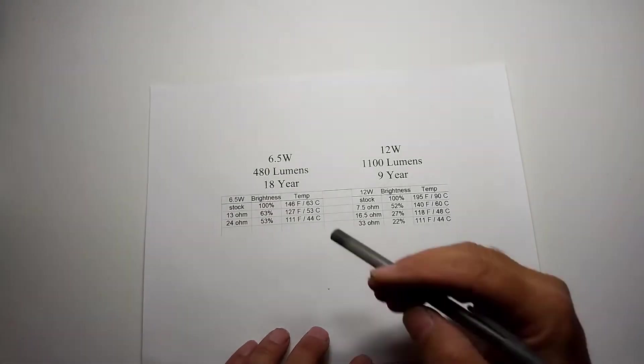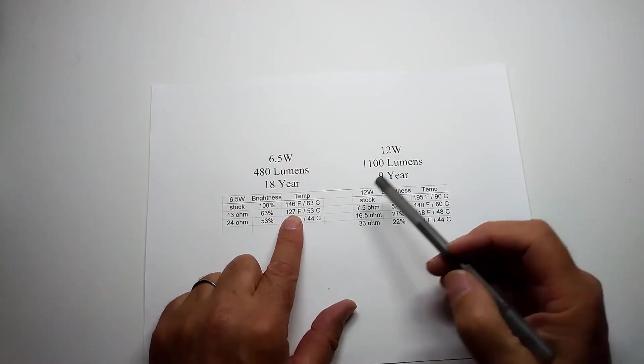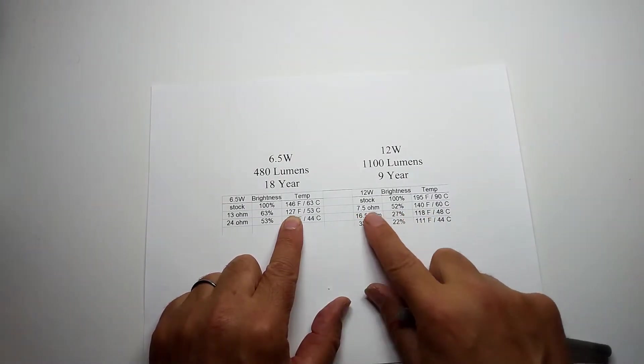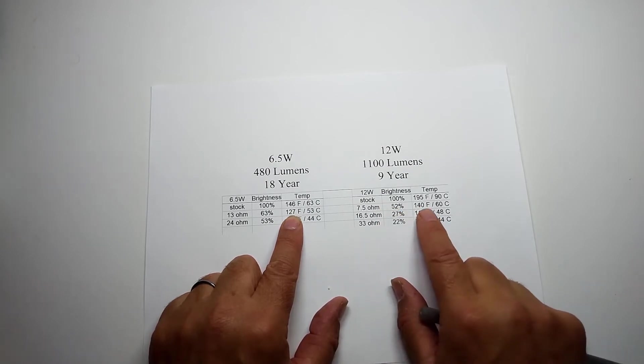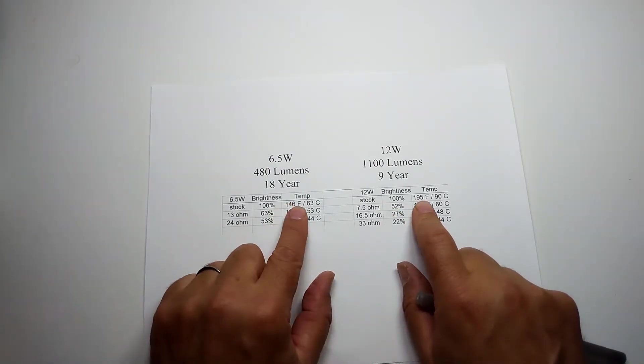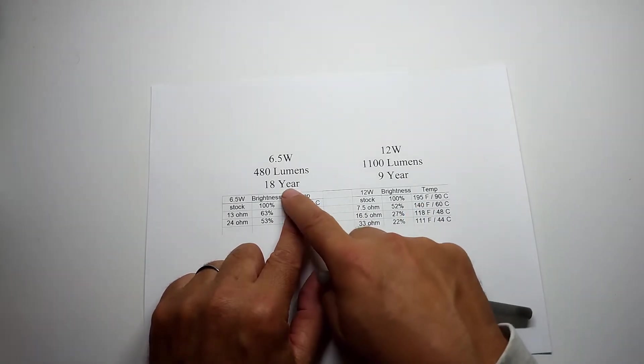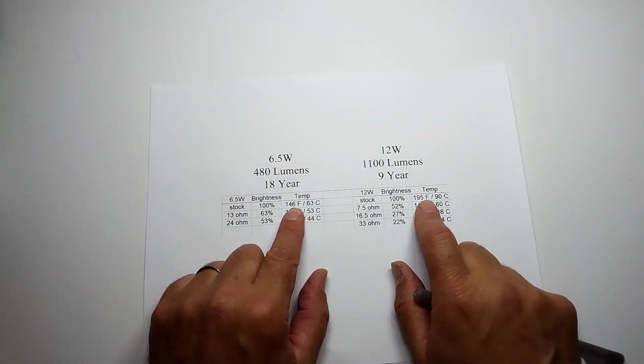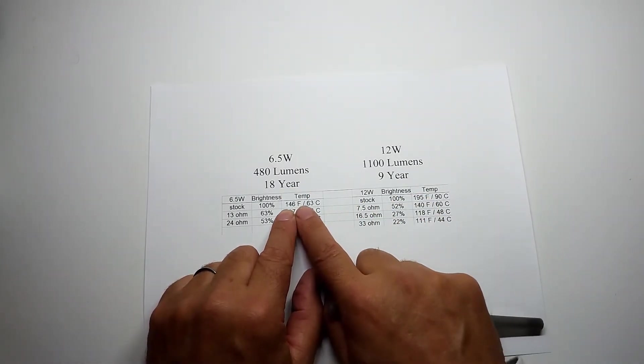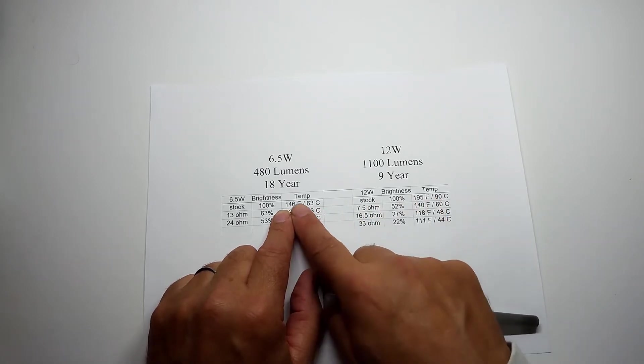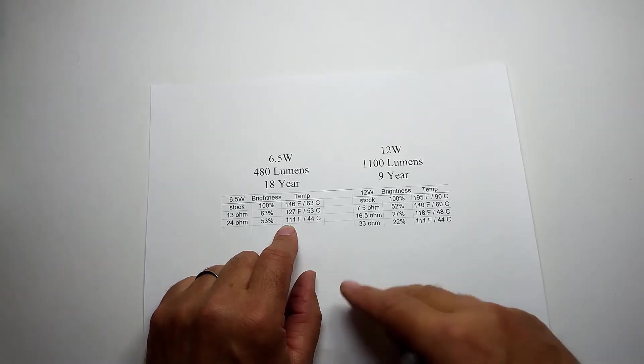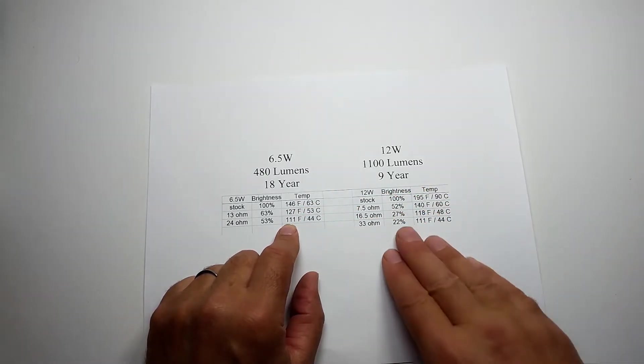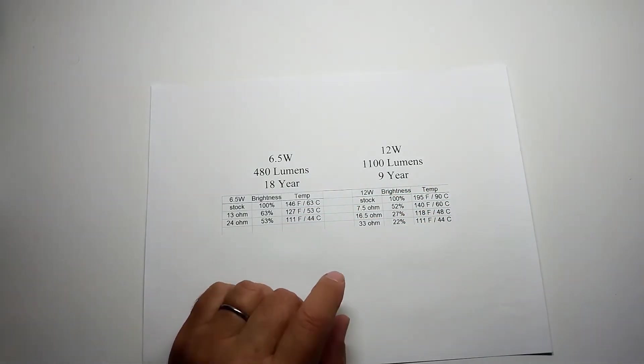What's interesting is if you take the stock resistor out and cut it in half, it significantly reduces the temperature. The other thing that's interesting is the 18-year bulb basically starts out with a 50-degree lower temperature, and that's how they basically extend the life of it. So as you continue to drop the temperature, you'll increase the life of the light bulb.